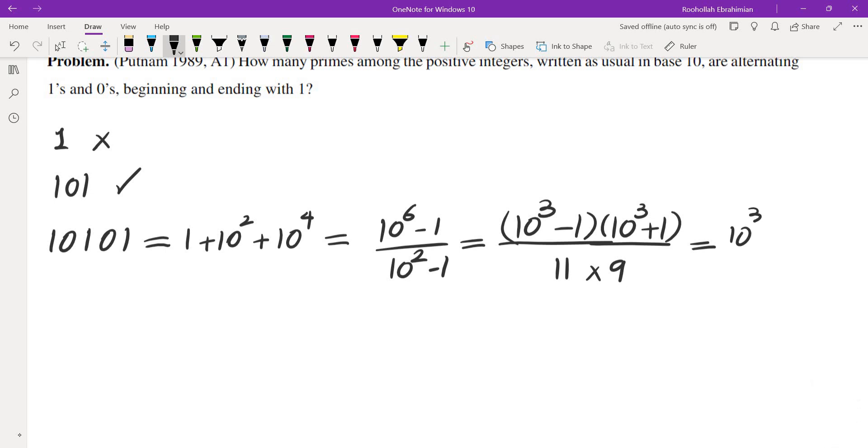Now, we can write this one down as 10 cubed minus 1 over 9 times 10 cubed plus 1 over 11. Both of these are integers. This is an integer. This is an integer. And, of course, they are both more than 1, which means this guy is not going to be a prime.